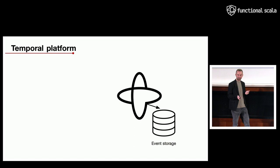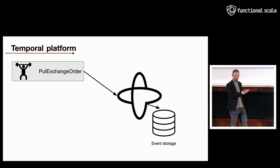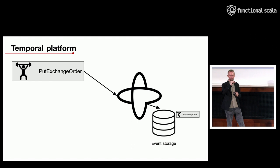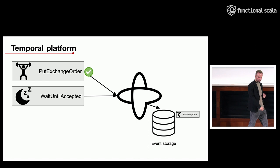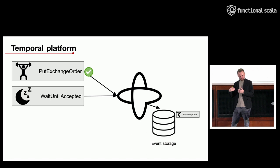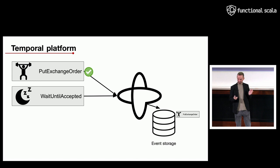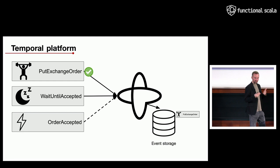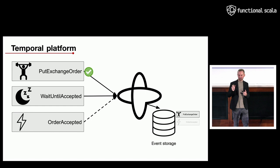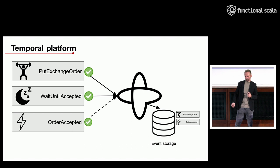With those building blocks, the Temporal platform executes your program as follows: it takes the first activity described in the workflow — like putting the exchange order into our system — tries to execute it, and when it succeeds, writes an event into storage marking that step as succeeded. Then it sees the workflow should wait for external events, like the order being accepted, and suspends the workflow execution completely until that event happens. After some time the workflow receives a signal that Bob accepted the exchange order, so Temporal writes that event into storage and marks those steps as succeeded.